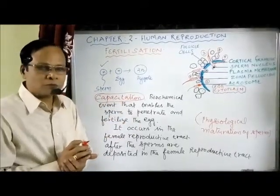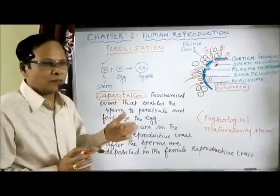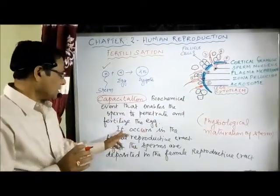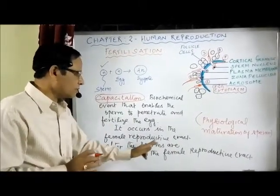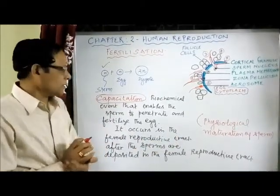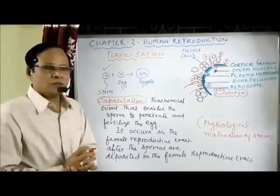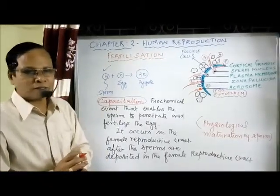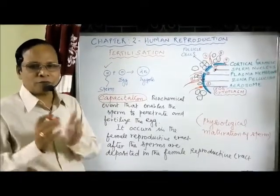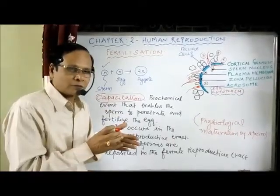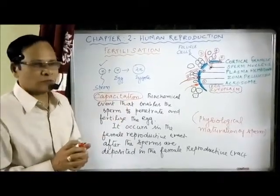During capacitation, the sperms undergo some changes so that they are able to penetrate the egg and fertilize it. It occurs in the female reproductive tract after copulation, when the sperms are deposited. Biochemical events occur that make the sperm capable of fertilizing. This is capacitation — one of the important exam questions.